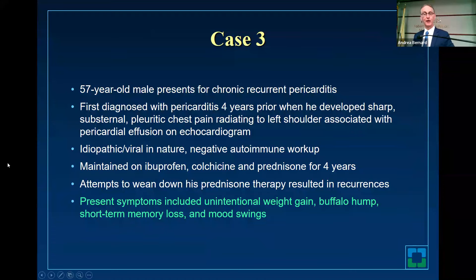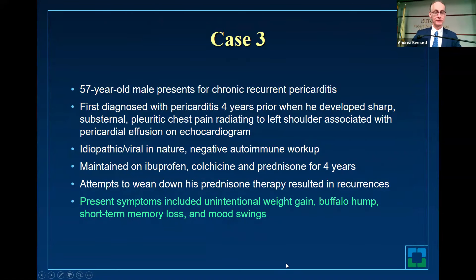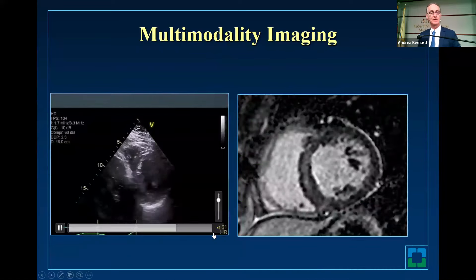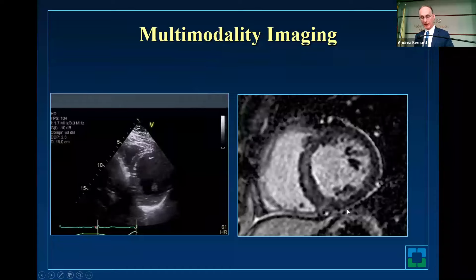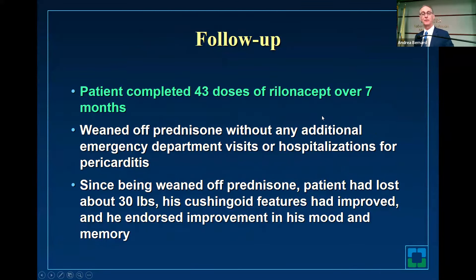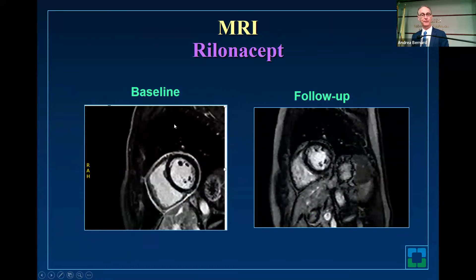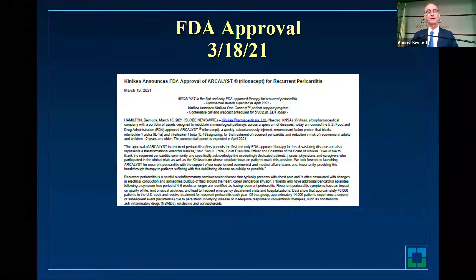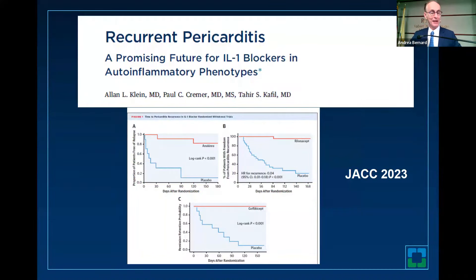Here's a case of a gentleman from Chicago with chronic recurrent pericarditis, on triple therapy with all the side effects of prednisone — the Buffalo hump, weight gain, and memory loss. He has the septal bounce, late enhancement, and was given rilonacept. Now he's over two years with this therapy and has weaned off prednisone and done quite well. The question is when to stop. Looking at baseline MRI and follow-up MRI — the FDA approved rilonacept in March 2021. Getting back to the newer drug, we did an editorial for JACC comparing anakinra, rilonacept, and the Russian drug. They're almost identical in terms of the Kaplan-Meier curve versus placebo.